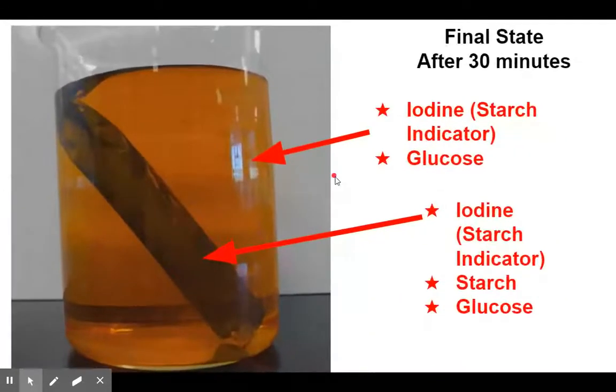Now we can look at our diagram and look at the final state after 30 minutes. Outside in the environment, we started out with iodine and we still have iodine, and then glucose is present in the outside. So it diffused from the inside to the outside. And then iodine diffused from the outside of the cell to the inside of the cell. Starch, however, did not diffuse through the membrane.